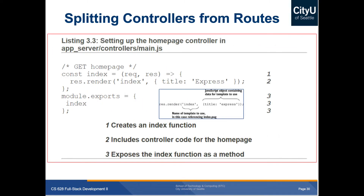In the controller, you define a constant index as an anonymous function with two parameters — request and response — which are the standard callback parameters. Inside, you call res.render to respond to the GET request by rendering the index view and passing in a title key with the value 'Express', so you can reuse the title keyword in your templates. To summarize: step one creates the index function, step two includes the controller logic for the home page, and step three exposes the index function as a method.